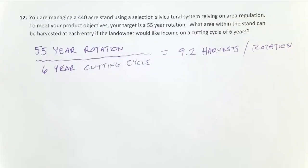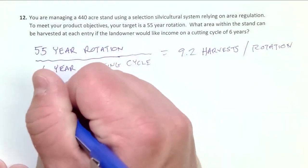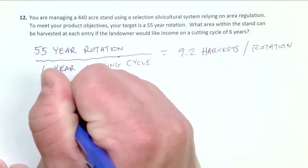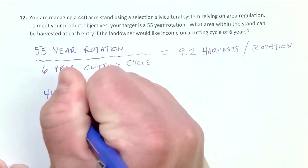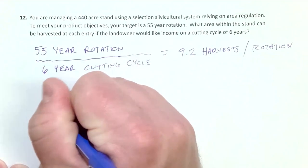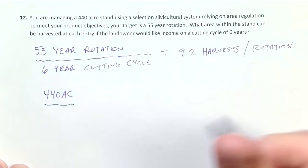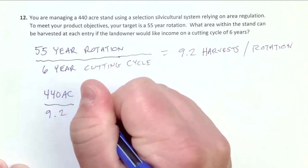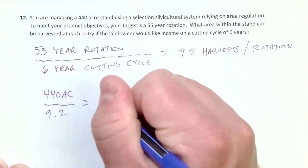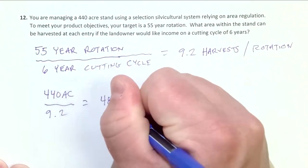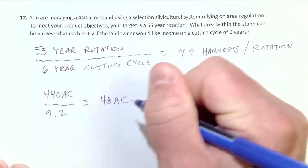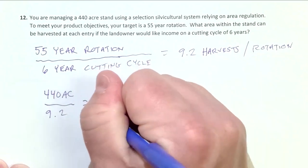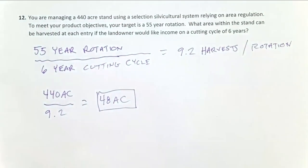What I can do now is take 440 acres in my stand and divide it by the harvests per rotation, 9.2. That would tell me that if I cut 48 acres every 9.2 years, that would make this all make sense and work.